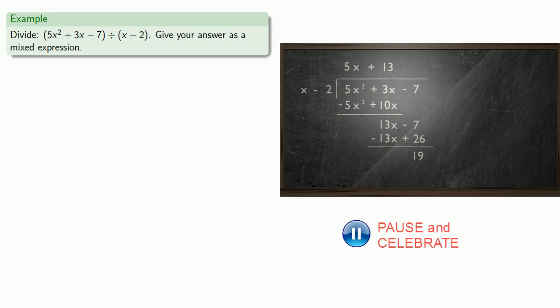Well, almost. We still have to write down our quotient. Our quotient is going to be 5x plus 13. Our remainder 19 can be expressed as the fraction 19 over x minus 2.